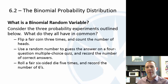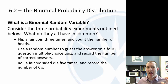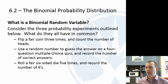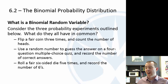So a binomial random variable — you might guess something from the word 'binomial.' Looking at these three examples: we flip a fair coin three times and count the number of heads; we use a random number to guess on a four-question multiple choice quiz and record the number of correct answers; and we roll a die five times and record the number of sixes.